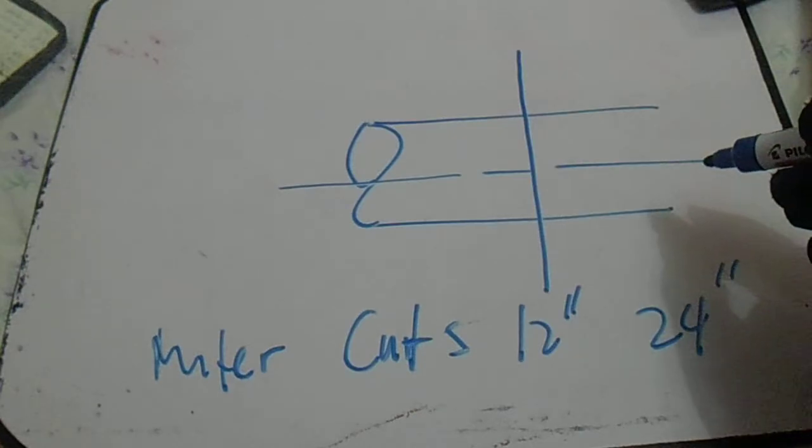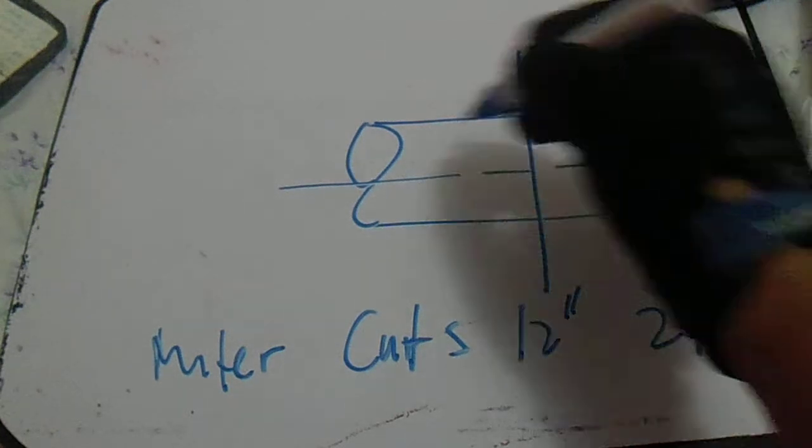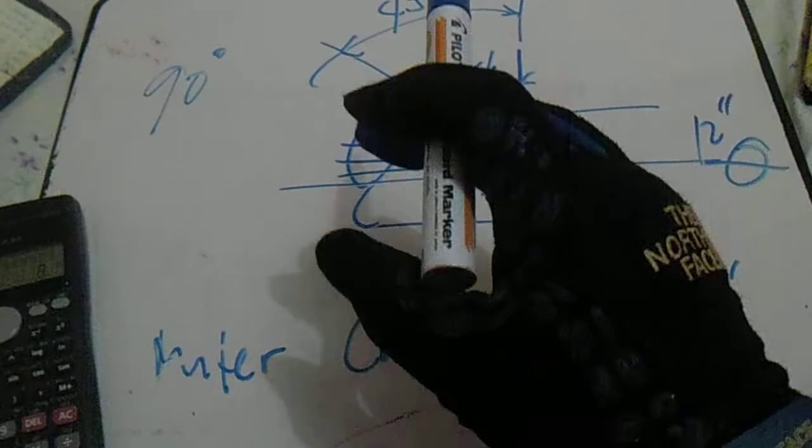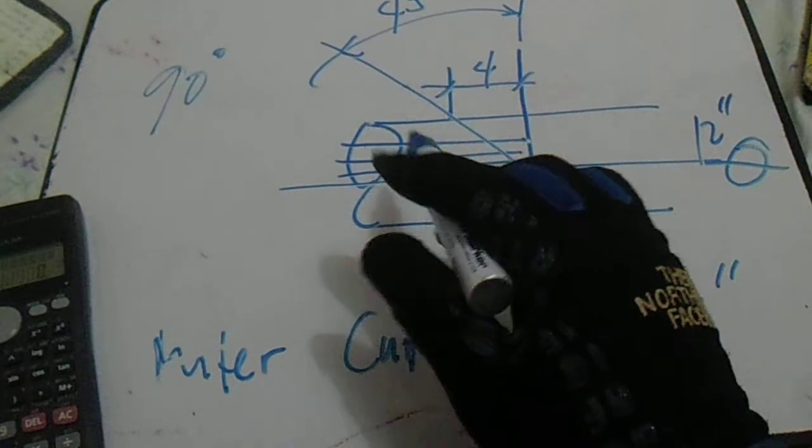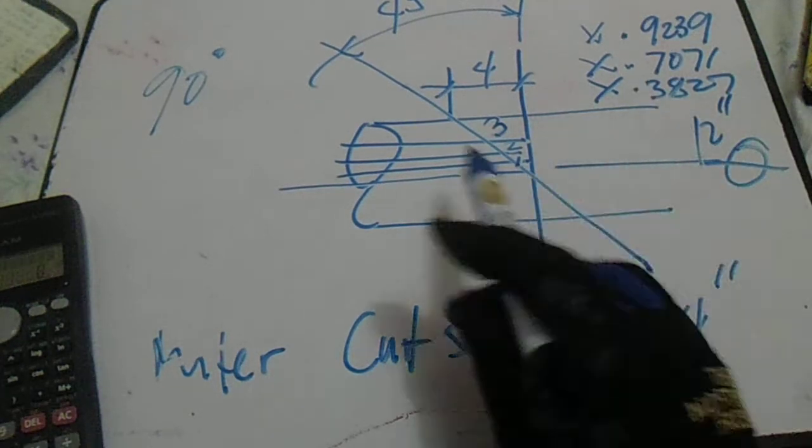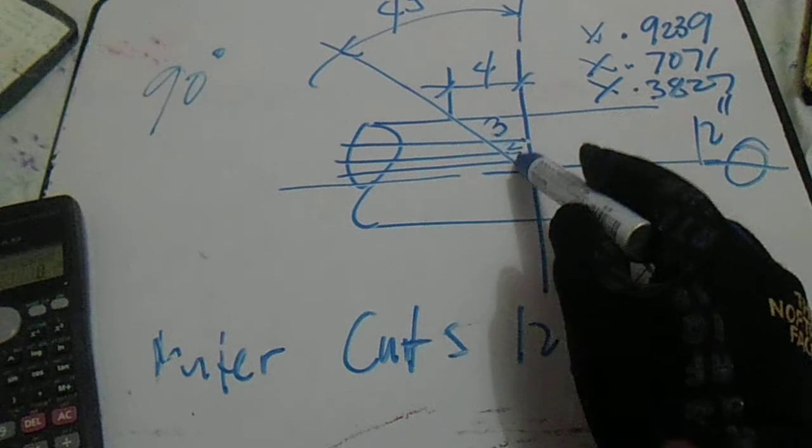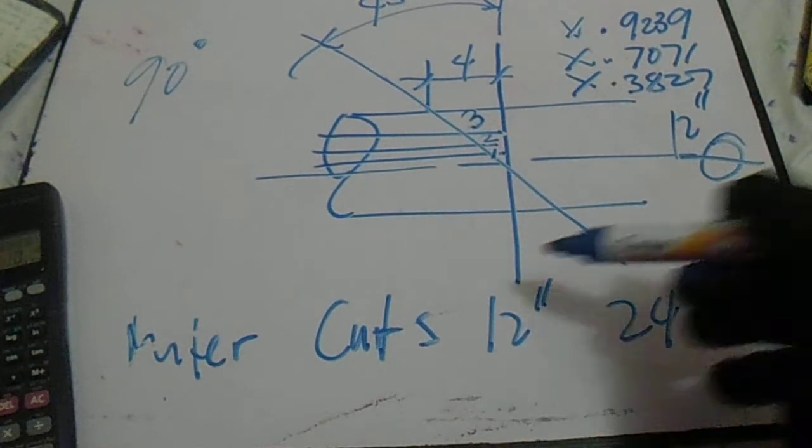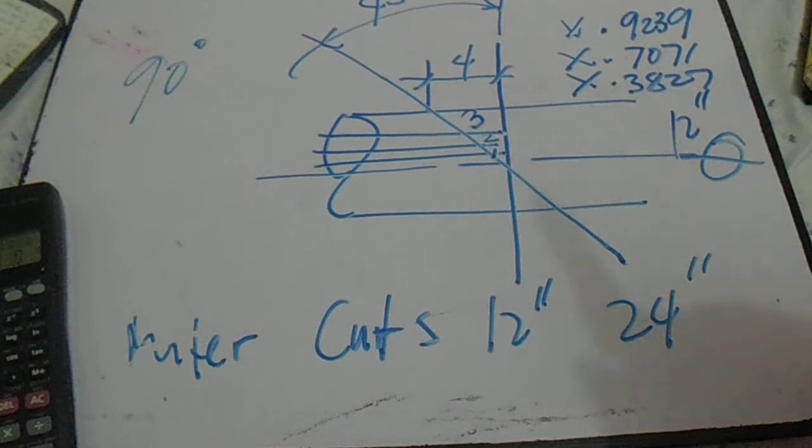We have line number 4 of dimension equals tangent of cut to 7. This is an easy way to find this. Line number one, two, three, four. It's a miter cut 12 inch to 24 inch. This is a mark.